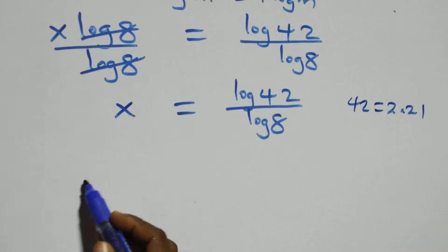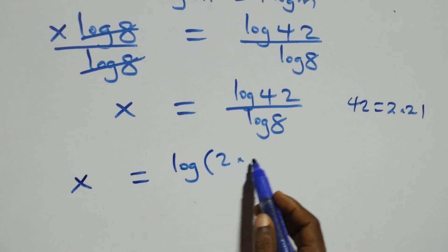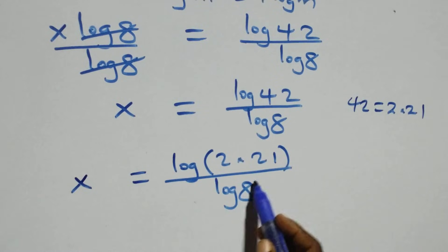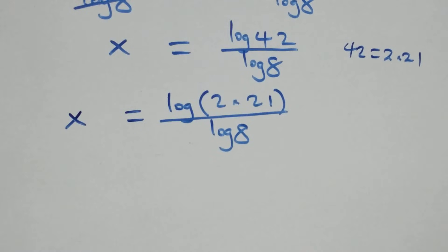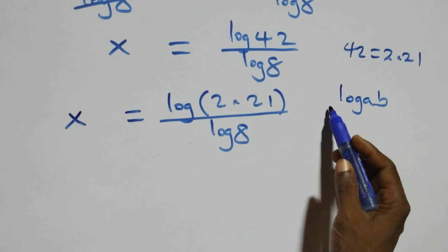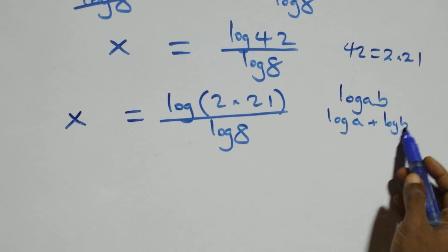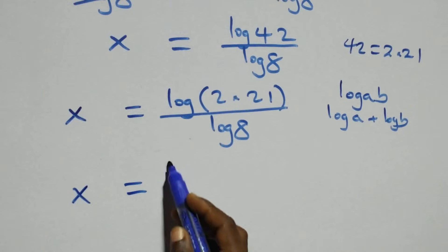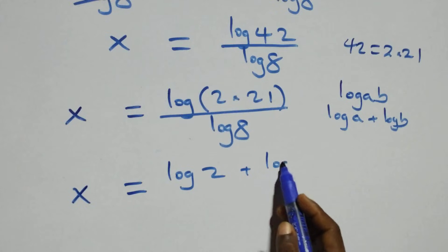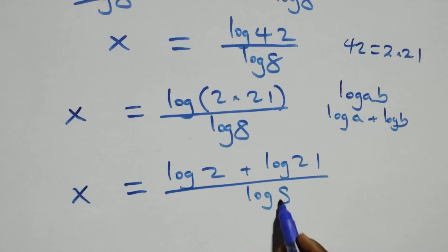Then what we have here becomes x equals to log of 2 times 21, over log 8. This follows the log product rule, where log a times b is the same thing as log a plus log b. So we have x equals to log 2 plus log 21, over log 8.